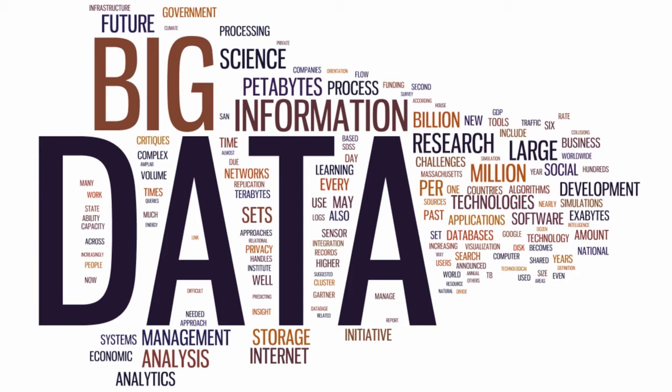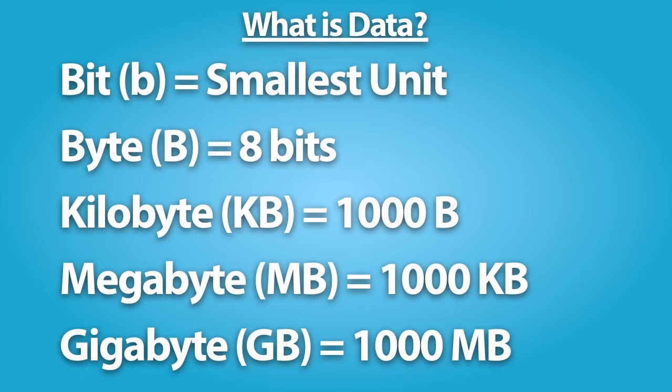The amount of data is increasing at such a fast rate that we have had to invent new terms to quantify data. For example, a bit is the smallest unit of data a computer uses. A byte is equal to 8 bits. A kilobyte is 1,000 bytes, about a paragraph of text.